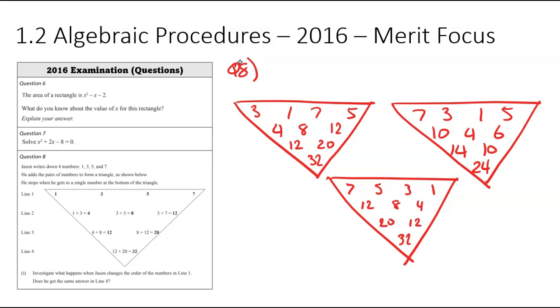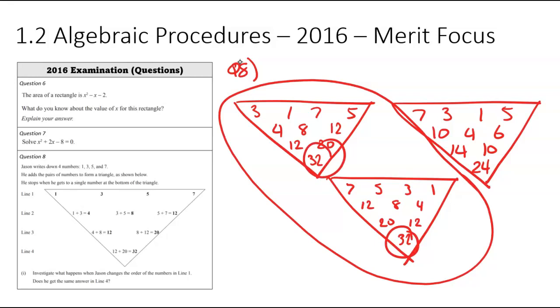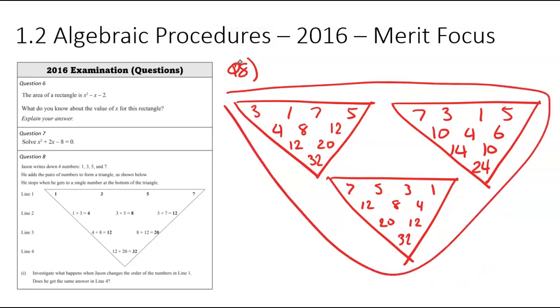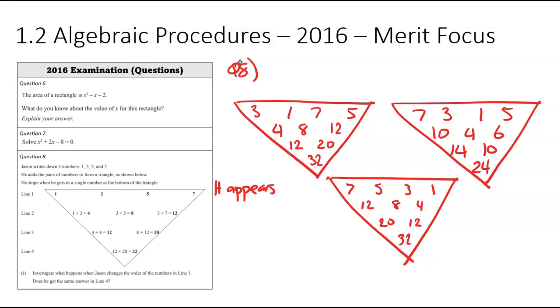So from these observations, we can conclude the order does appear to make a difference. But I should note the marking schedule does allow for a bit of variation. So if you only did these two here, you could probably conclude that it doesn't make a difference. But in my instance, because I did three, I can conclude it does make a difference. Doesn't matter which answer you get, as long as you communicate your answer that's okay. So what I'm going to say is, it appears that the order of line one, and just a reminder, line one, that's what we're actually changing, does affect the answer in line four.